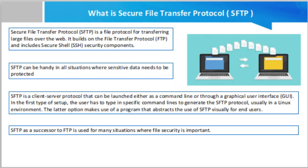An SFTP server requires both communicating parties to authenticate themselves, either by providing a user ID and password, or by validating an SSH key, or both. One half of the SSH key is stored on the computer of the client, while the other half is loaded on the server and associated with their account. Only when the SSH key pair matches can authentication occur.